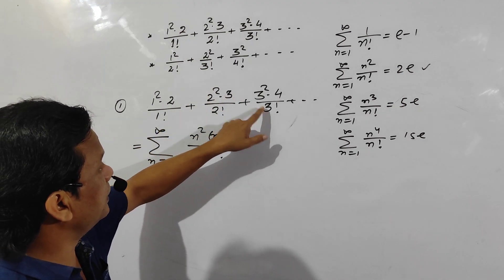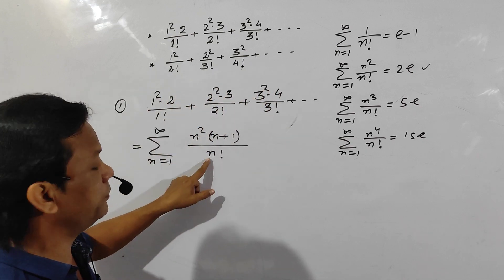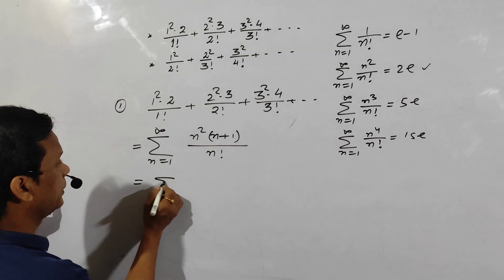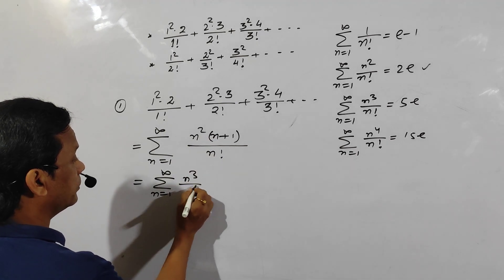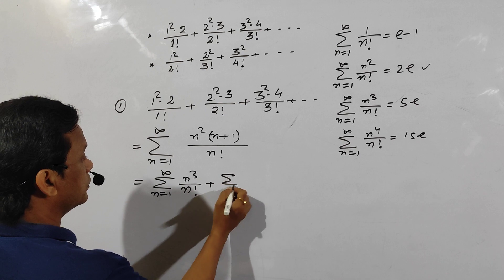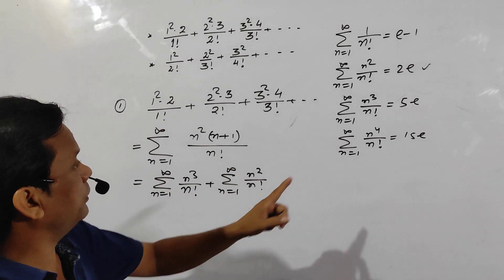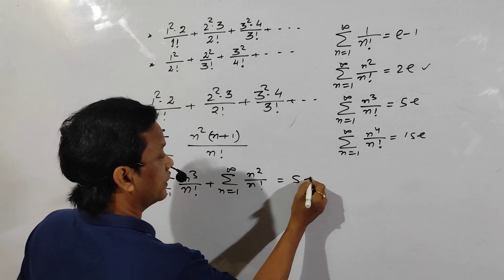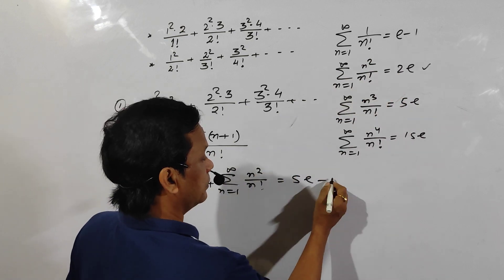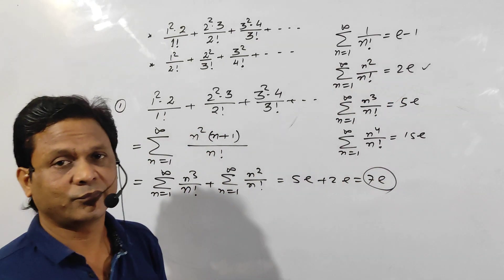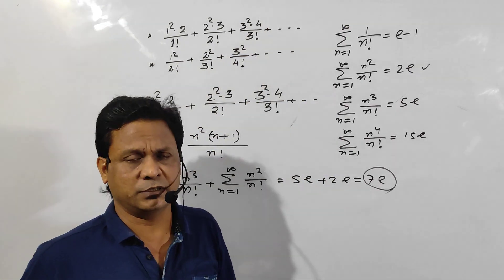So the general term is n²(n+1) / n factorial. Multiplying out and separating: summation of n³/n factorial plus summation of n²/n factorial. Now, summation n equals 1 to infinity of n³/n factorial equals 5E, and summation n equals 1 to infinity of n²/n factorial equals 2E. So the answer is 5E plus 2E equals 7E. You should find the general term and then apply these four formulas — nothing else.